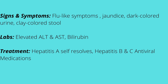Signs and symptoms of hepatitis include flu-like symptoms such as malaise, body aches, and fever. The patient will have jaundice, dark-colored urine, and clay-colored stools. Lab values to monitor will include elevated ALT and AST levels because the liver is not functioning properly, as well as elevated bilirubin.